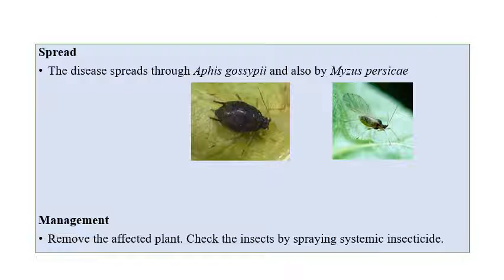Mosaic disease is spread through species of aphids — Aphis gossypii and Myzus persicae. Coming to management aspects: removal of affected plants and spraying with systemic insecticides to control the vector, which can manage the disease.